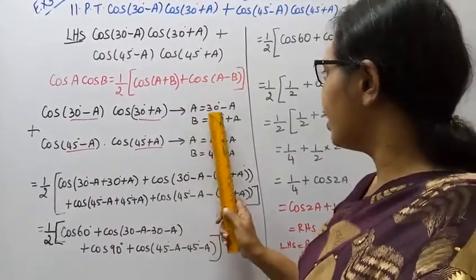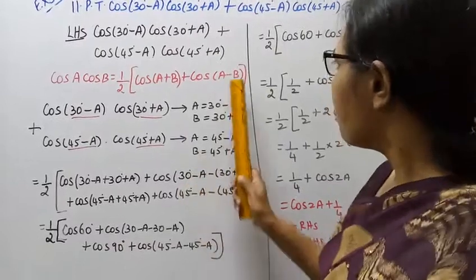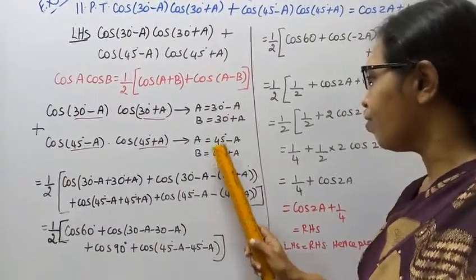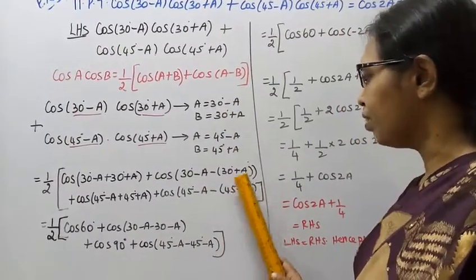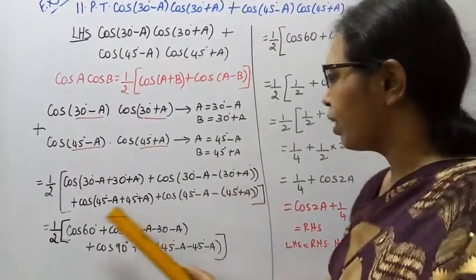Plus cos A is 30 degree minus A, minus B, that is minus of 30 plus A. Then close the bracket, plus.